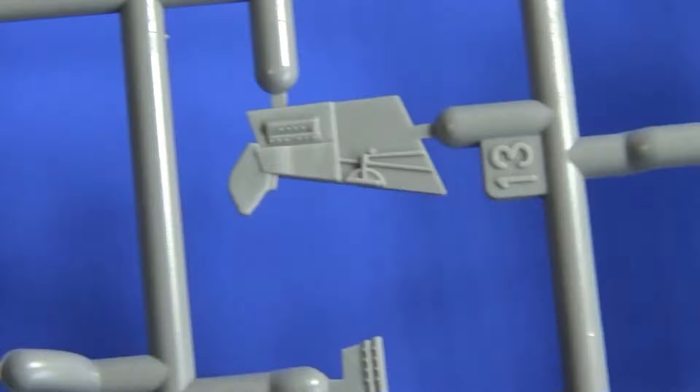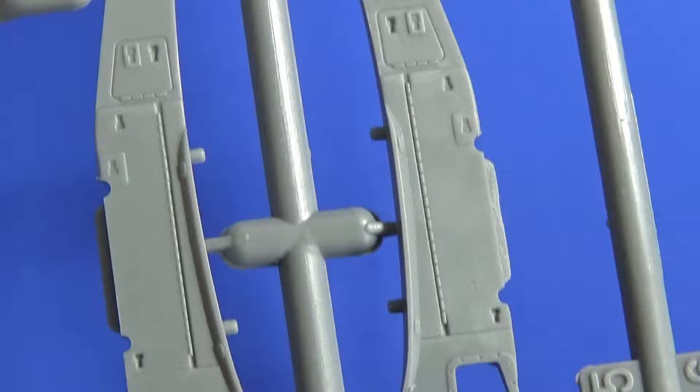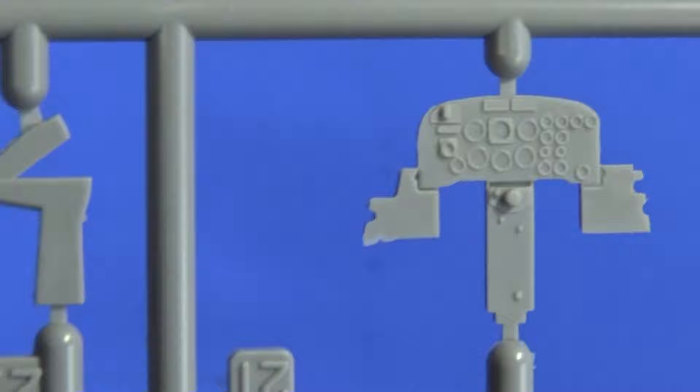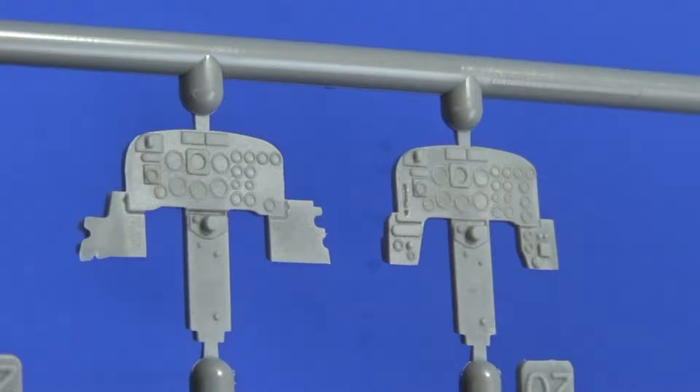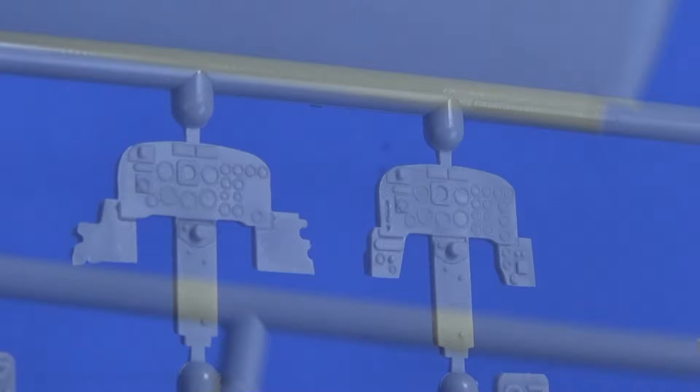These little side parts for the interior of the cabin. Again, all very nicely molded. These are the stores racks for the underside of the wings. And here we have the instrument panels, duplicated instrument panels. Again, these will probably dry brush really nicely. And we can just add some little bits of spot colour here and there to brighten it up as well.